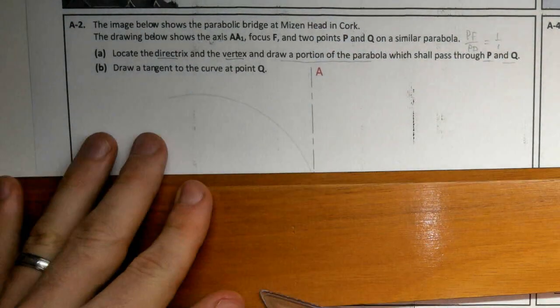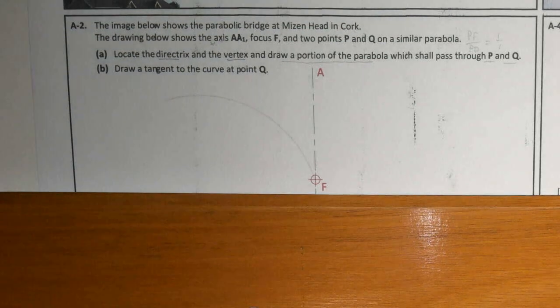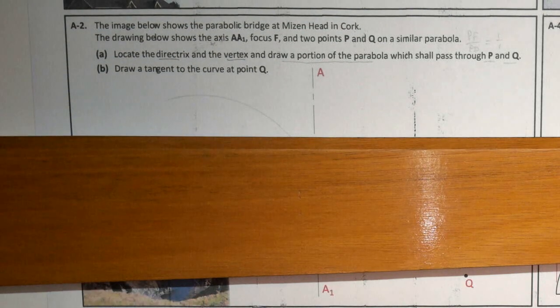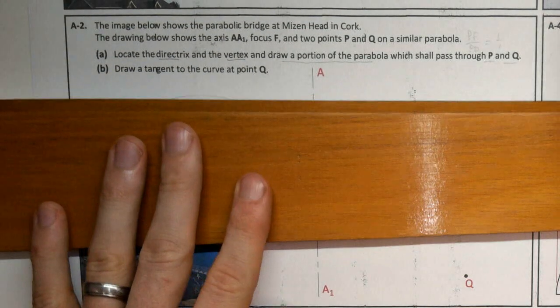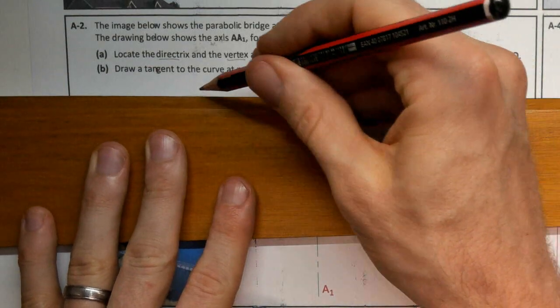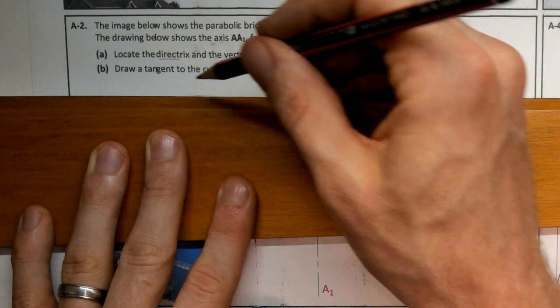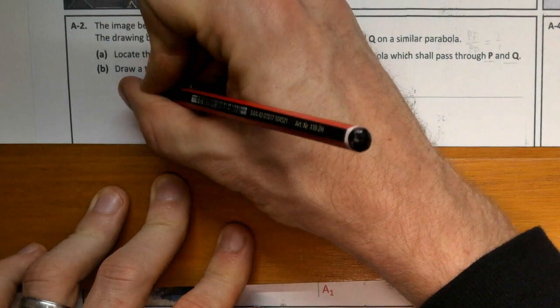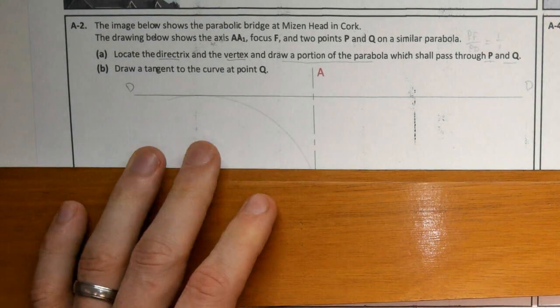Now we need to go perpendicular to our axis. Our axis here is vertical. So we can draw a line here, tangential to that, and that's our directrix D.